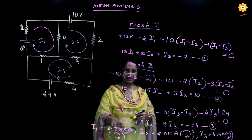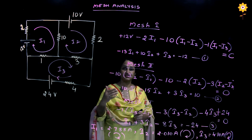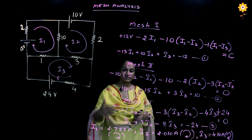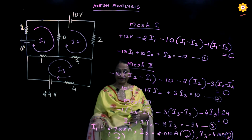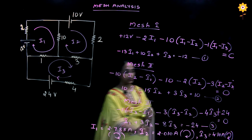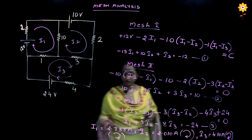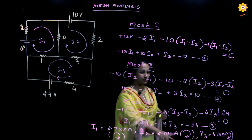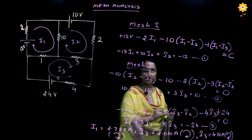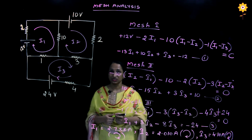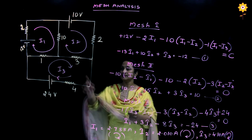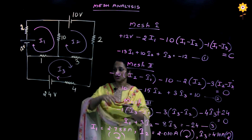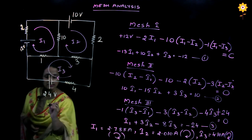Set this equation equal to zero and simplify. Once you have written the mesh equations for all three meshes, solve them to find the values of I1, I2, and I3. The direction of I1, I2, and I3 are all clockwise. Now, suppose the question asks you to determine the current through the 3-ohm resistance — how do we find that?